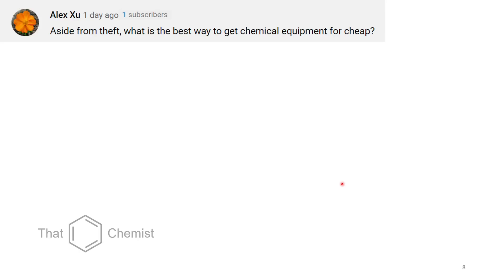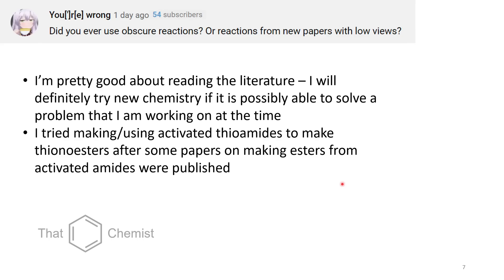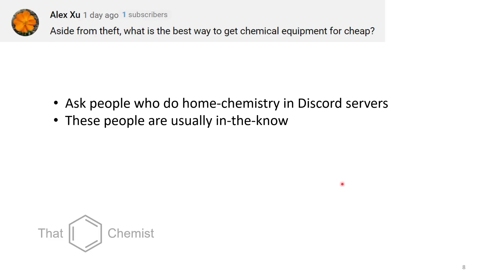Aside from theft, what is the best way to get chemical equipment for cheap? So I would never advocate you steal any chemical equipment whatsoever. What I will say is that if you're looking to get cheap chemistry equipment, there's usually people in discords who are trying to get rid of old equipment or would be able to point you in the right direction, those people tend to be in the know. And so I'd recommend going to those sorts of communities.